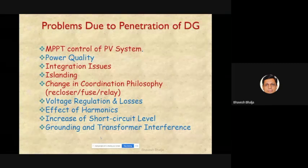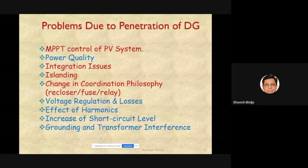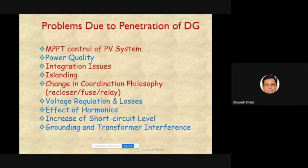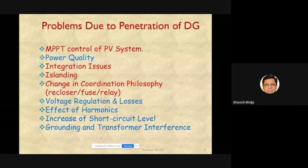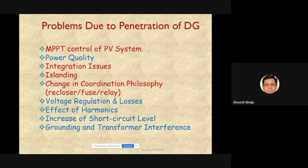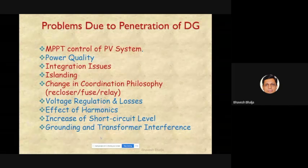Voltage regulation and losses are also important: when DGs like solar and wind are incorporated, voltage regulation changes and losses change as well. Harmonics impact was already covered under power quality. Another critical issue is increase of short-circuit level — when no DGs are present, switchgear (circuit breakers, isolators) is selected based on utility capacity alone.